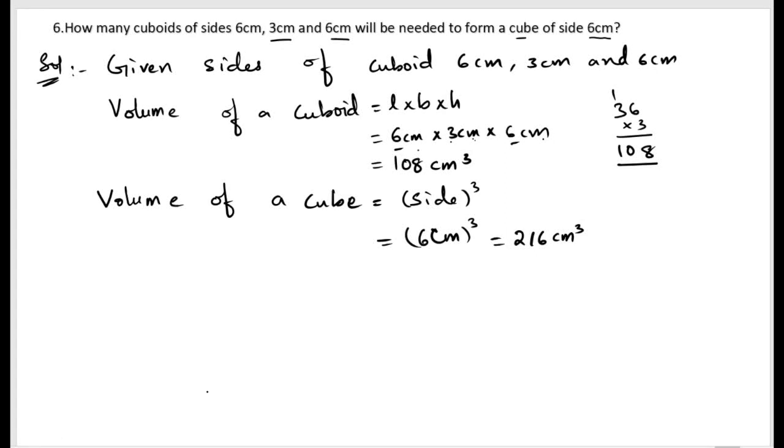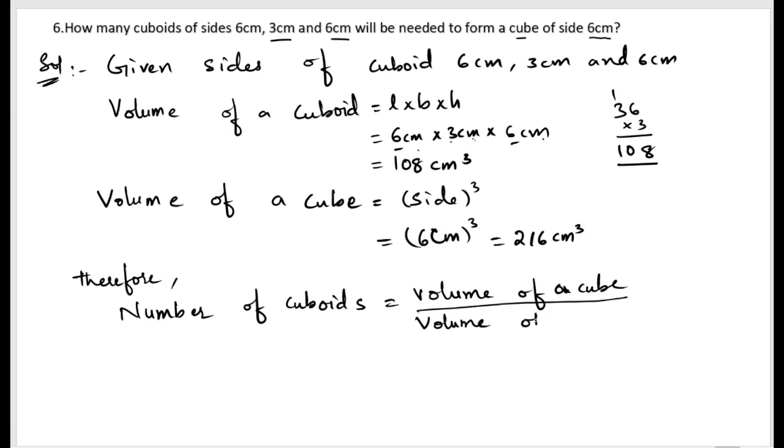Next, to find out how many cuboids we need to make a cube, let us write: Therefore, number of cuboids required equals volume of a cube divided by volume of a cuboid.